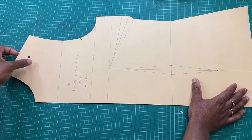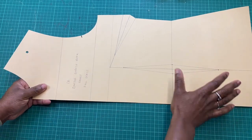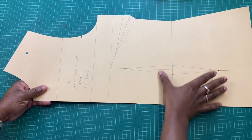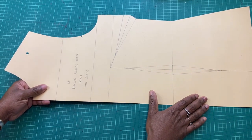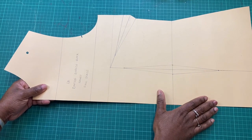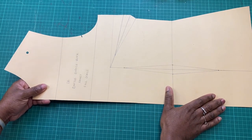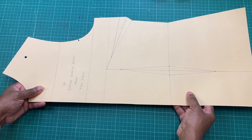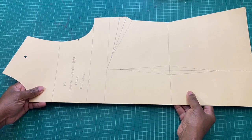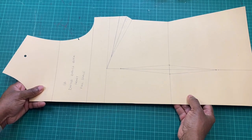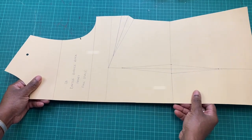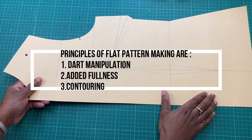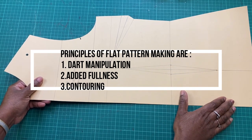Flat pattern making is the method you use to change your blocks into the design of your choice. If we know the basic principles of flat pattern making and how to apply them, we can create any design without affecting the fit of the original pattern. The three principles of flat pattern making are the principle of dart manipulation, the principle of added fullness, and the principle of contouring.